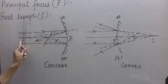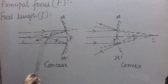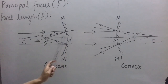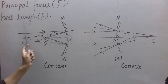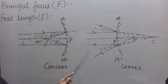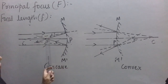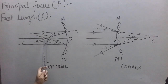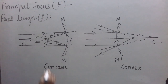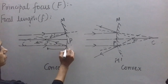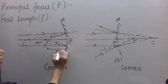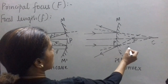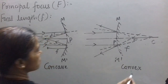Focal length is simple: the distance between the focus F and the pole P of a spherical mirror is called its focal length, represented by small f. The distance PF is the focal length of the concave mirror, and similarly PF is the focal length of the convex mirror.